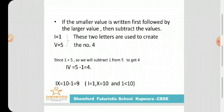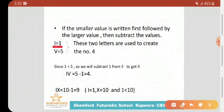Next, second rule: If the smaller value is written first followed by the larger value, then subtract the values. I represents 1, V represents 5. These two letters are used to create the number 4. Since 1 is less than 5, so we will subtract 1 from 5 to get number 4. IV means 5 minus 1, equals 4. Whenever we have smaller value followed by the larger value, we have to subtract the values.